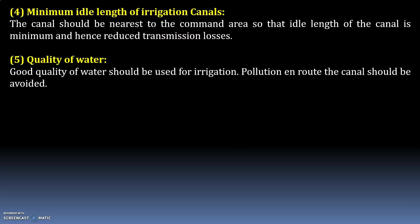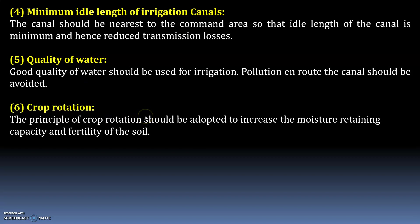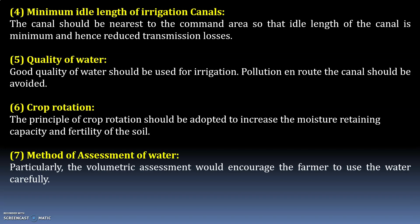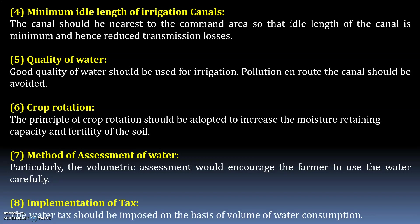Good quality water should be used for irrigation and pollution of canals should be avoided. Crop rotation should be adopted to increase moisture-retaining capacity and fertility of soil. Volumetric assessment of water encourages farmers to use water carefully. Water tax should be imposed on the basis of volume of water consumption. These are the main methods to improve duty.